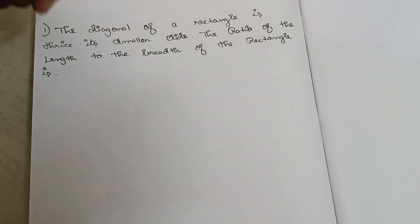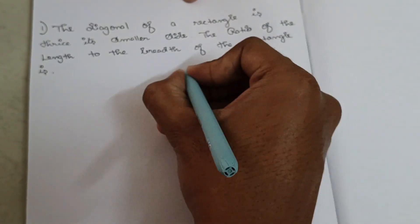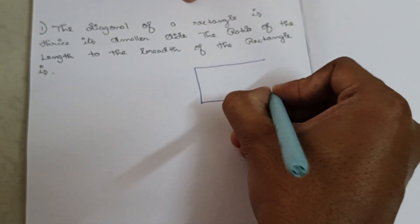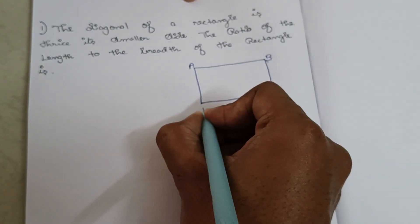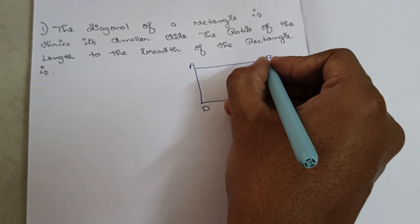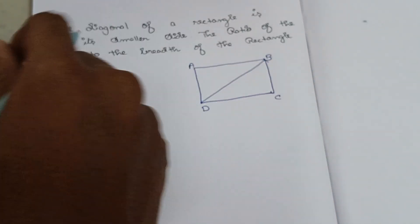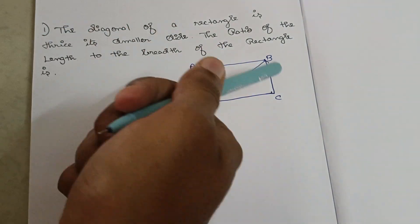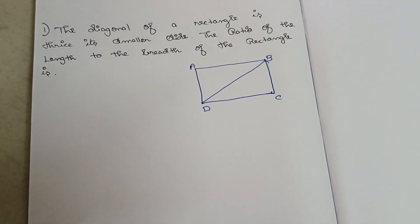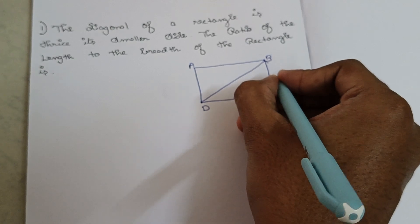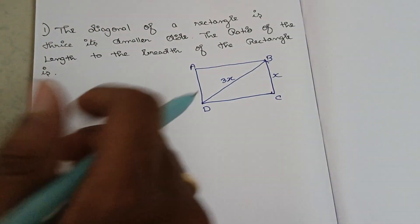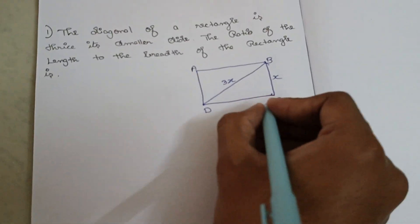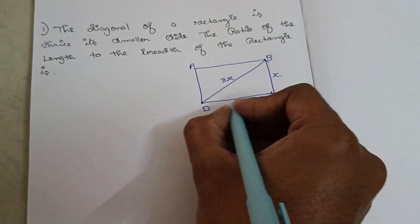Now let's see the question. First, let's look at a diagram. This is a rectangle. Mark a, b, c, d. Now this is the diagonal. The smaller side is 3x — so the diagonal is 3x. This is 3x. The length is y.